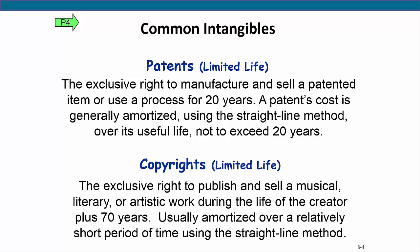Intangibles with limited lives are amortized over the shorter of the legal or estimated useful life using the straight-line method. Two of the most common types of intangible assets that are purchased are patents and copyrights. A patent gives the holder the exclusive right to manufacture and sell an item or process for 20 years. A patent is amortized using the straight-line method over its useful life, but never more than 20 years. Many companies amortize patents over a very short period of time. Patents could be held on new inventions, products, or processes such as cell phones and computer technology, drugs, and manufacturing equipment.